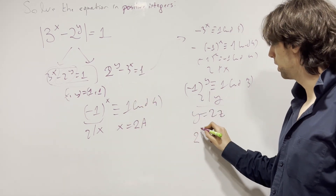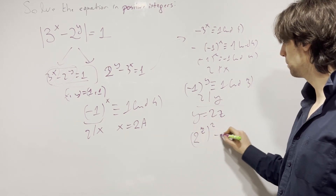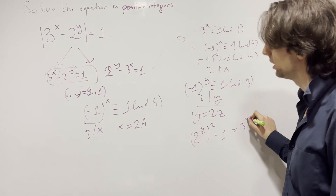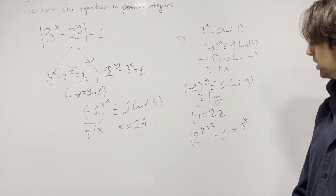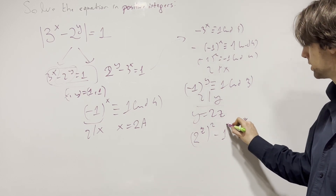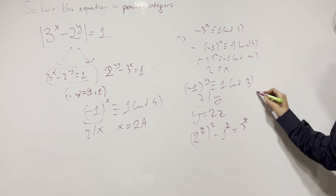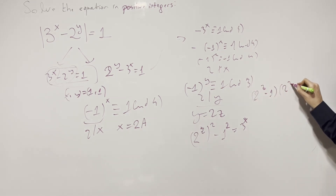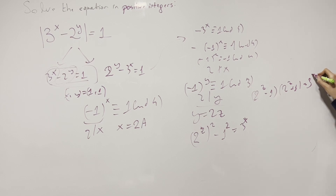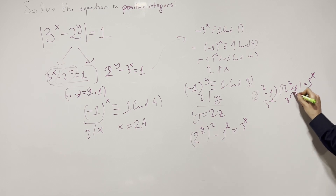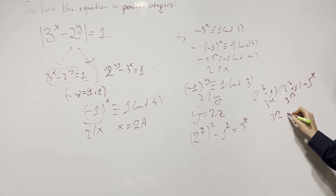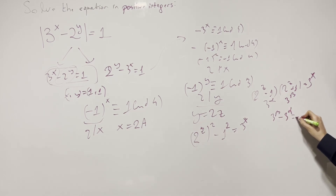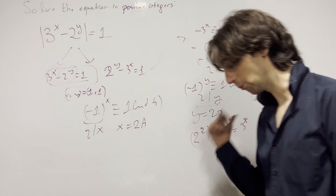Now we have 2 to the power of z, squared, minus 1 equals 3 to the x. It's the difference of squares — kaboom! So (2^z - 1)(2^z + 1) equals 3 to the x. These factors are 3 to the alpha and 3 to the beta. When I subtract, I get 3 to the beta minus 3 to the alpha equals 2.